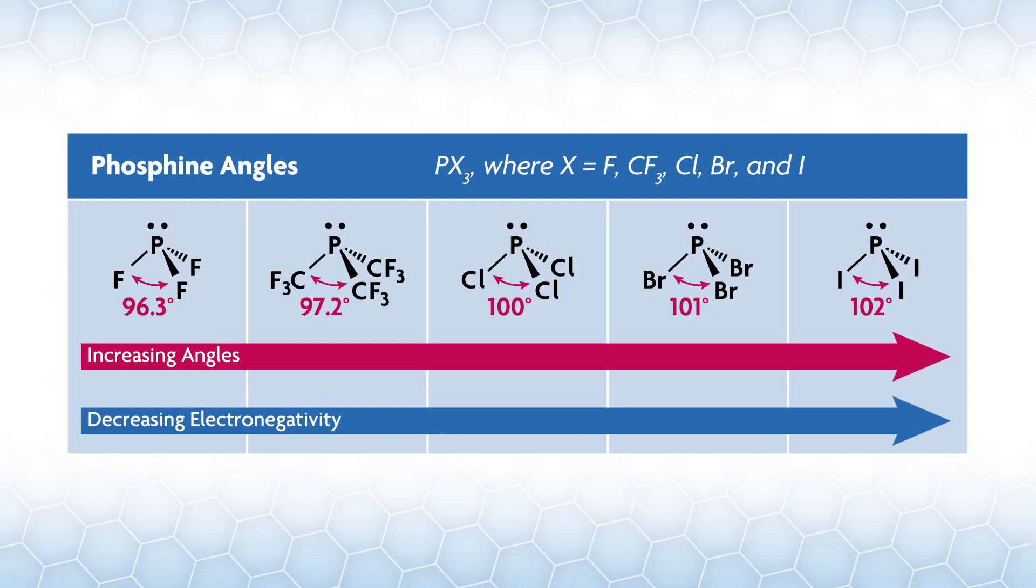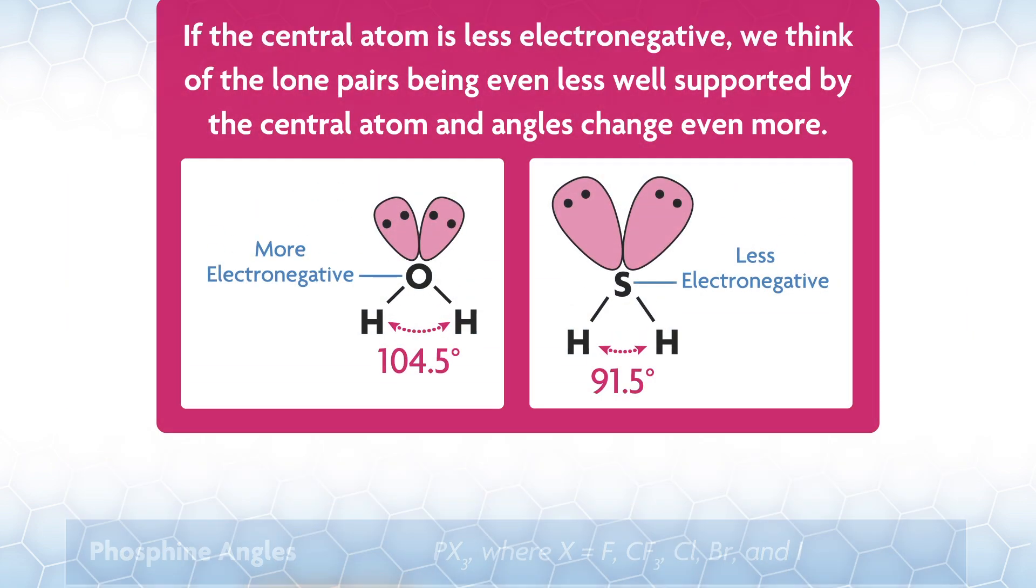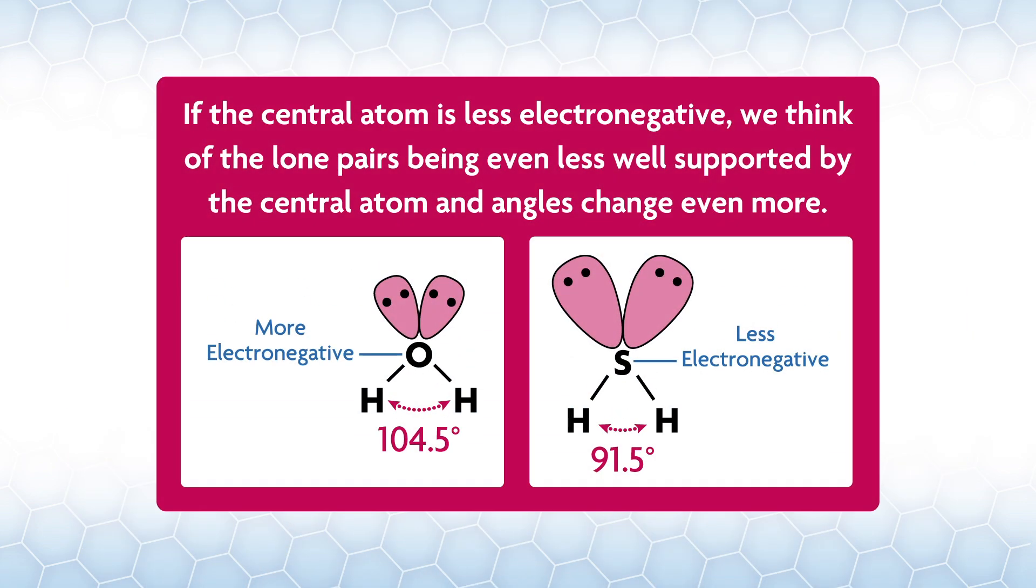For BrF5 with the AX5E VSEPR formula, the base structure is octahedral. The lone pair takes up more space, shrinking the F-Br-F angles, similar to ammonia. You can see this behavior in the angles of phosphines as well. Take the series PX3 where X equals fluorine, CF3, Cl, Br, and I. The order goes like this, which is related to the electronegativity of the group, not its size.